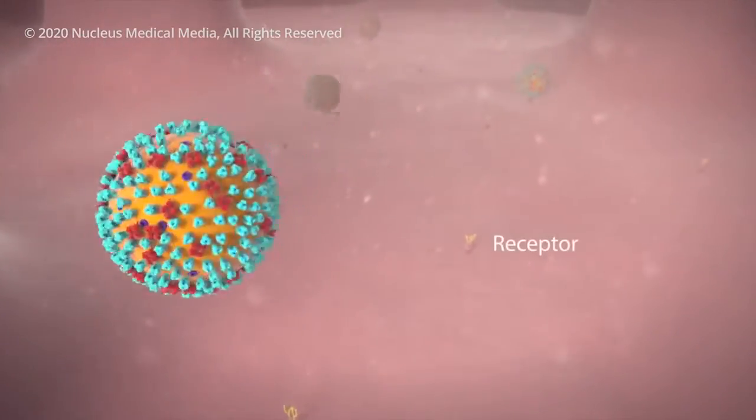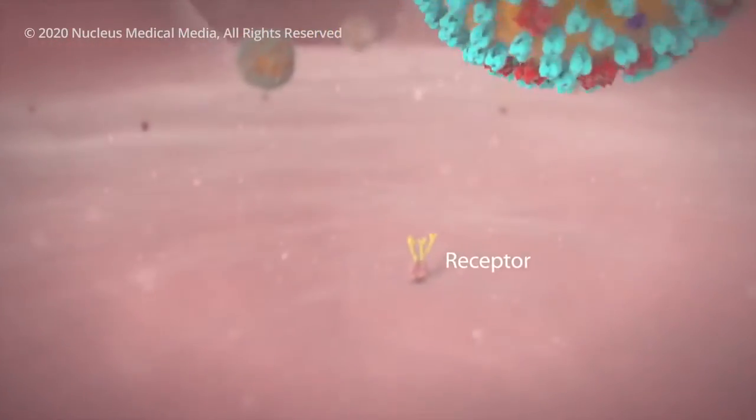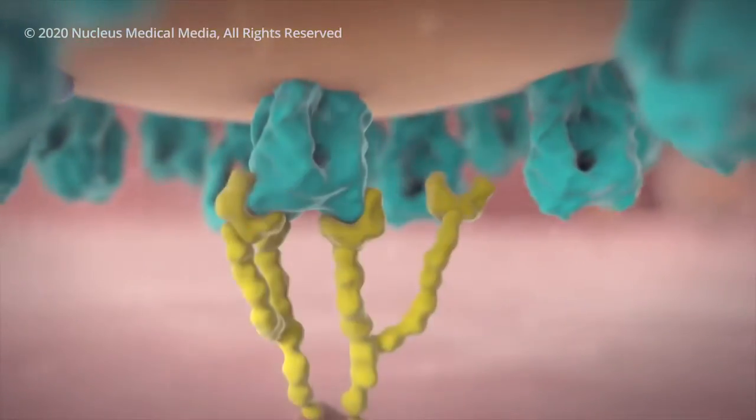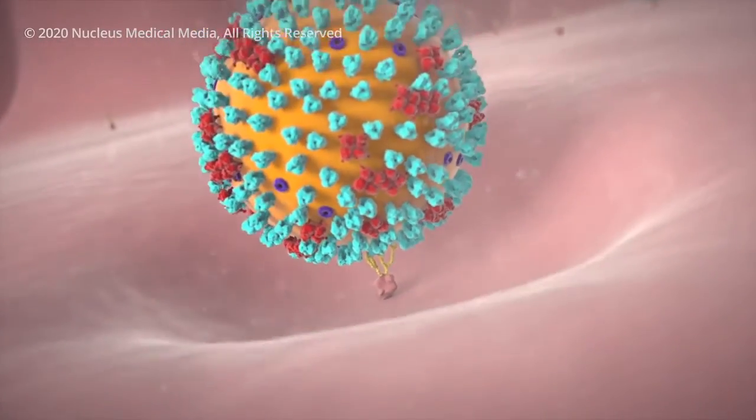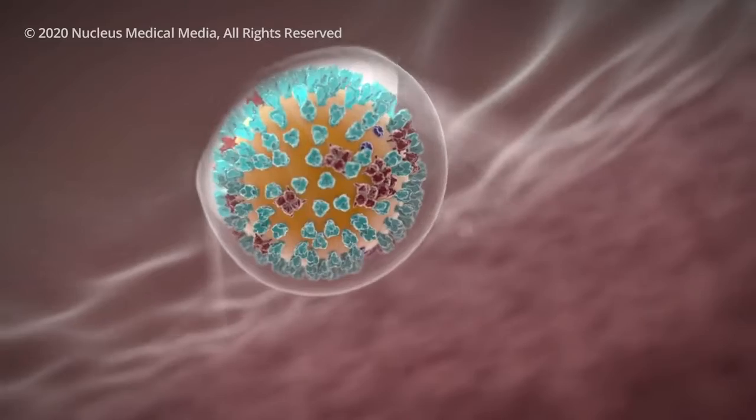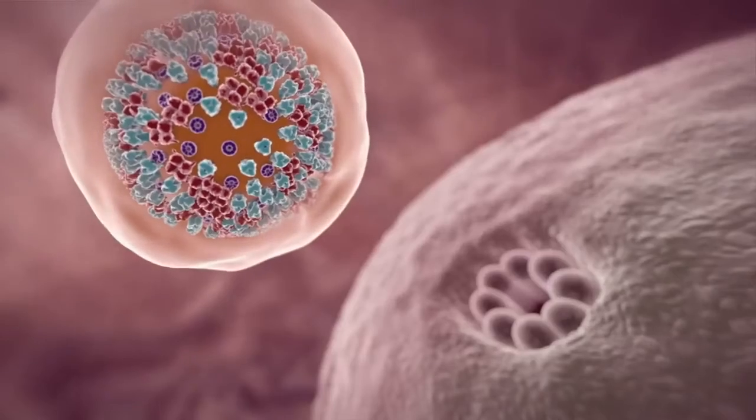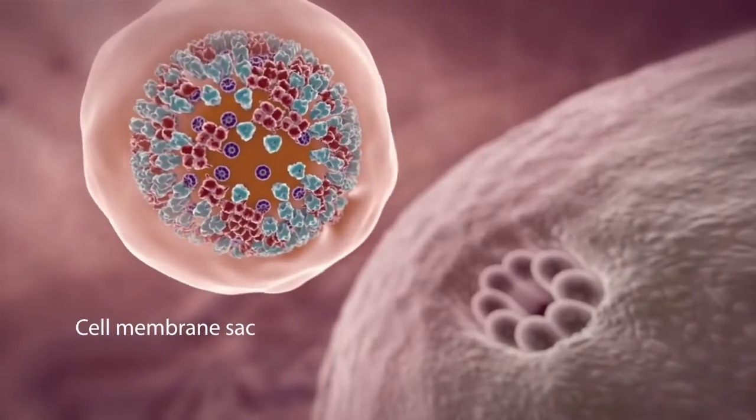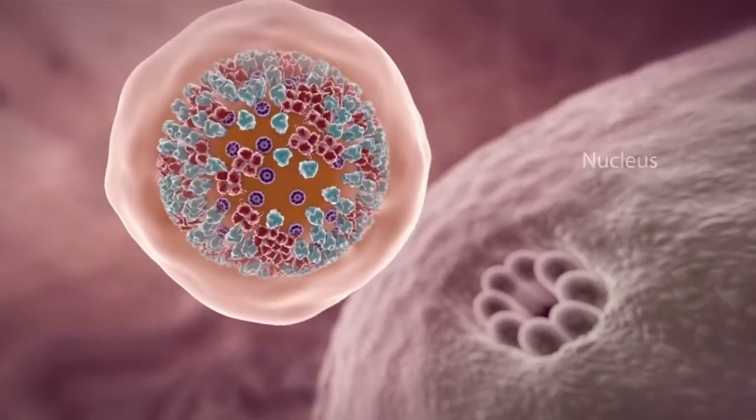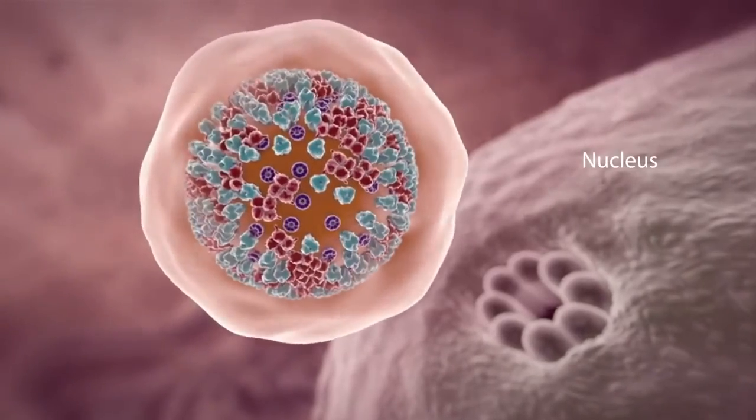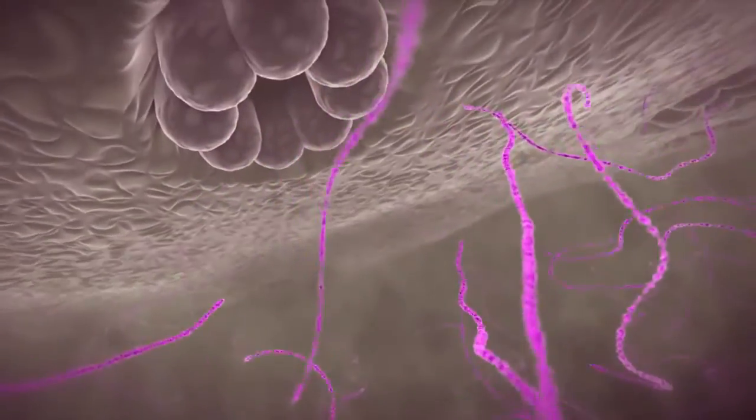One spike on the virus inserts into a receptor molecule on your healthy cell membrane like a key in a lock. This action allows the virus to get inside your cell. A typical flu virus would travel inside a sac made from your cell membrane to your cell's nucleus that houses all its genetic material.